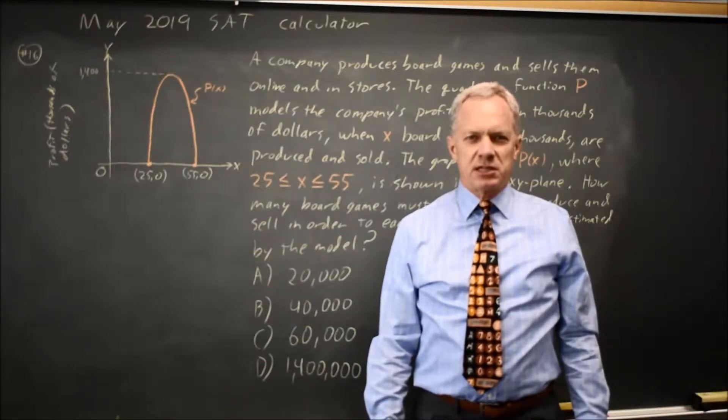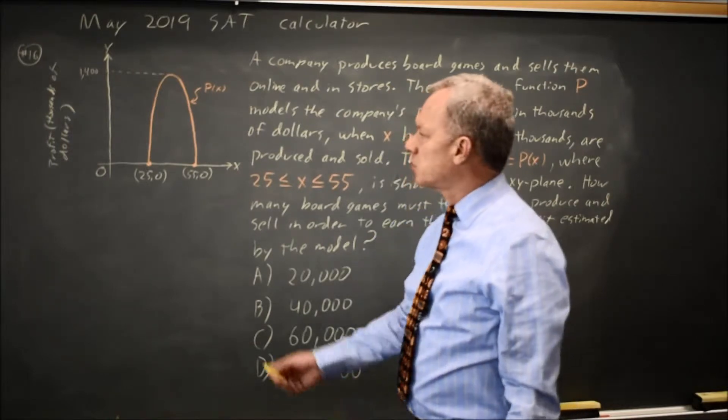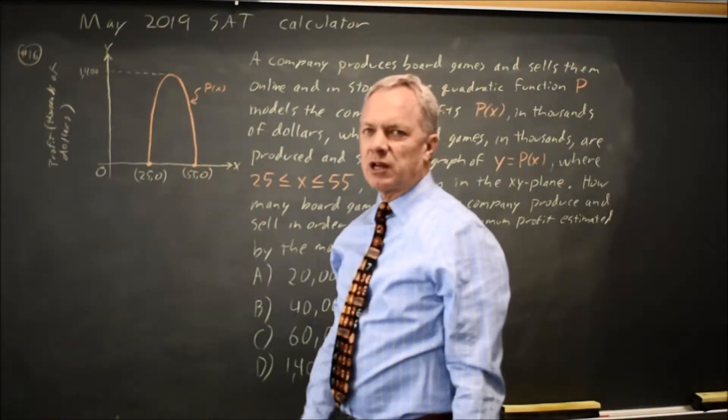This is Calculator Question Number 16 for the May 2019 SAT. The College Board asked for the maximum profit, where this is the graph of your profit curve, and we're told the graph is quadratic.